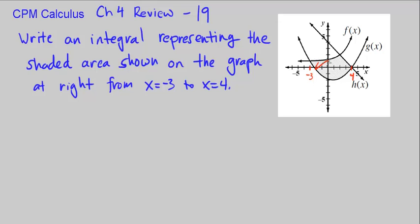So we want to find the area here. The area is going to be the integral, and I see two different integrals we're going to have to set up because here we have one curve on top, and then we have another curve on top. The transition is at x equals 2.